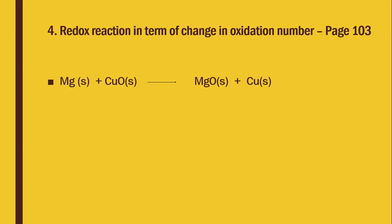Now our main topic: how to define the redox reaction in terms of change in oxidation number. We have learned what oxidation numbers are and how to calculate them. Now we will learn how to describe a reaction in terms of the change in oxidation number. Look at the reaction: magnesium atom reacts with copper oxide (solid) to form magnesium oxide and copper atom.